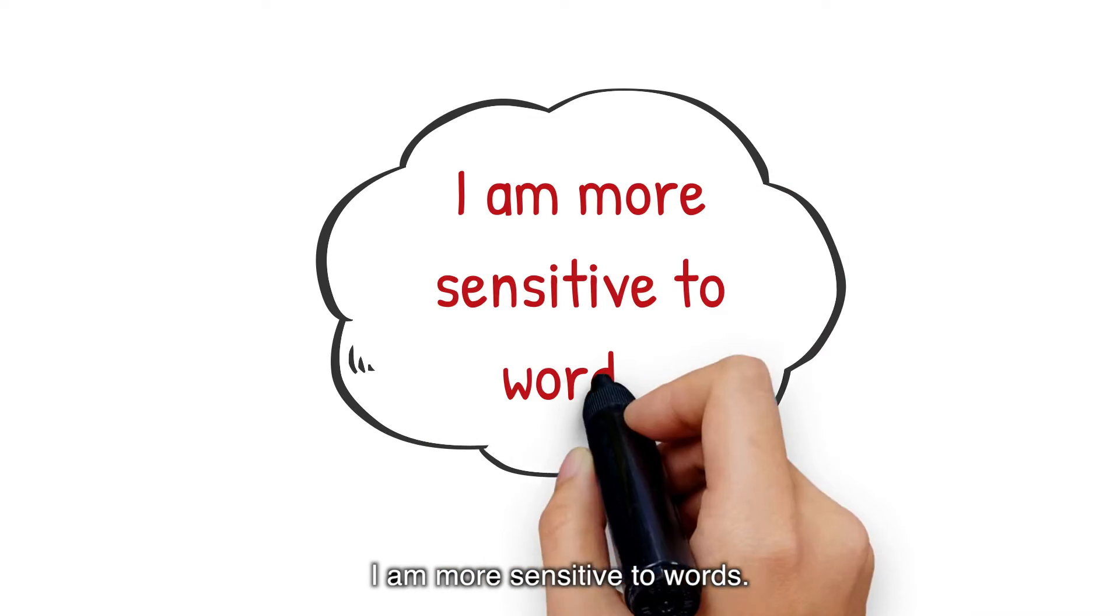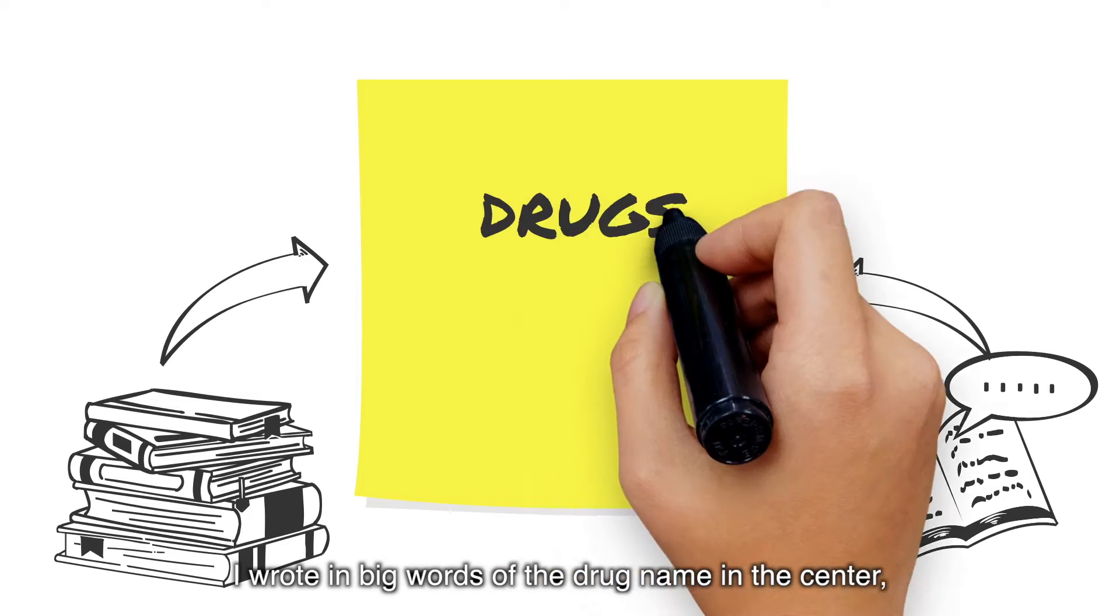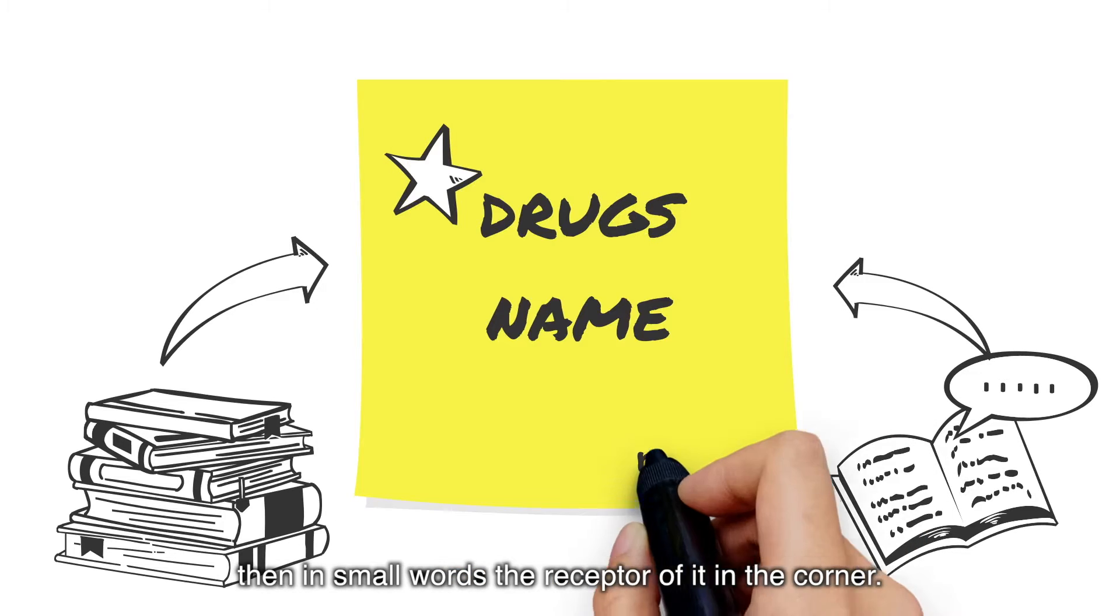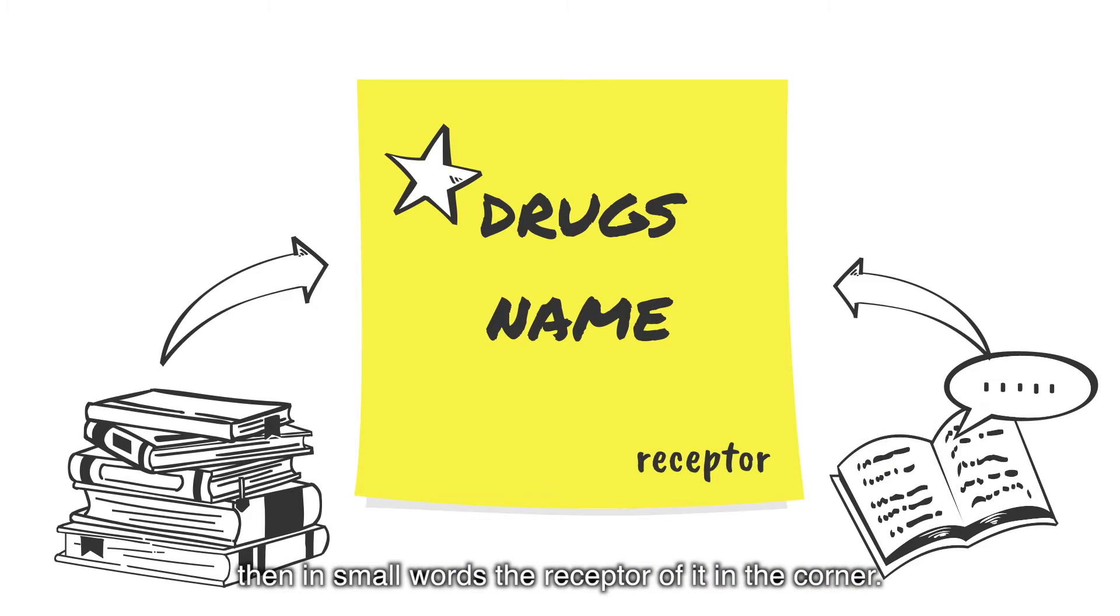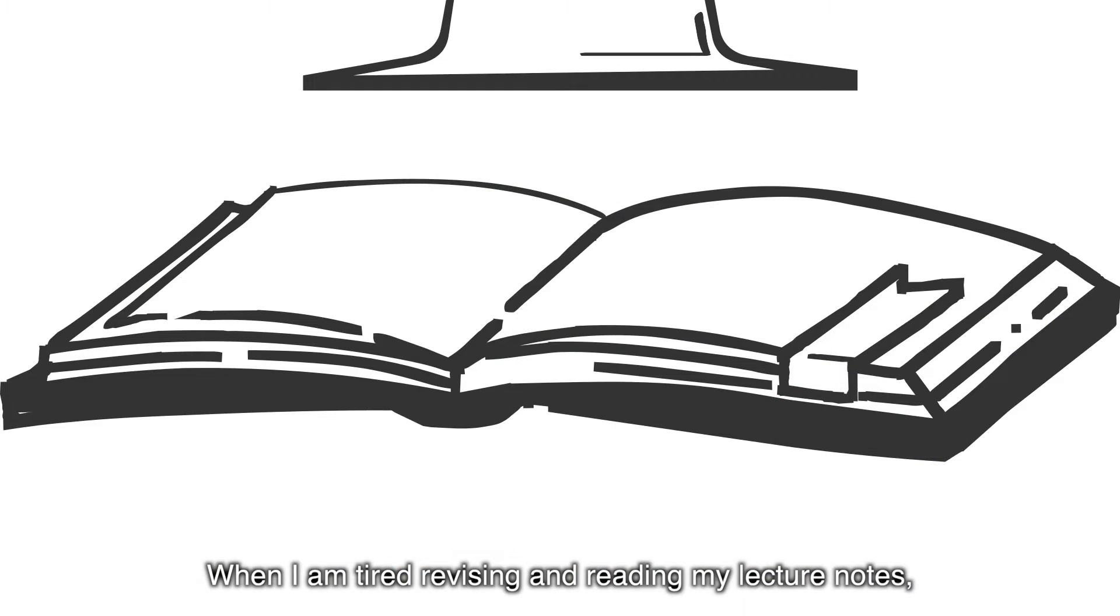I'm more sensitive to words, so I have used a method where I prepared some yellow post-its. I wrote in big words the drug name in the center, then in small words the receptor of it in the corner. Then I stick them all in front of my computer desk. When I am tired revising and reading my lecture notes, I would turn to those post-its and memorize the things on it.